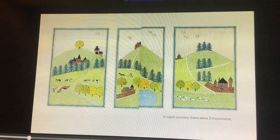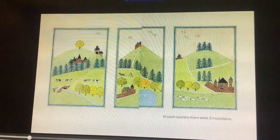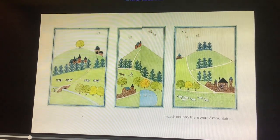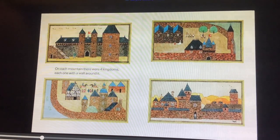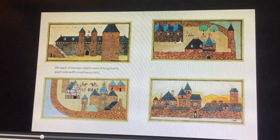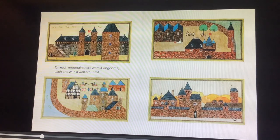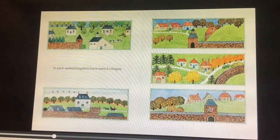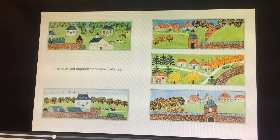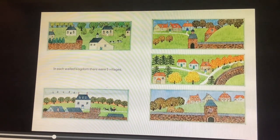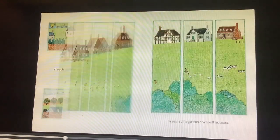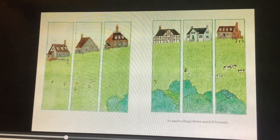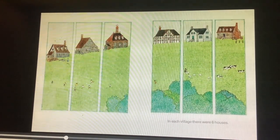In each country there were three mountains. On each mountain there were four kingdoms, each one with a wall around it. In each walled kingdom there were five villages. In each village there were six houses.